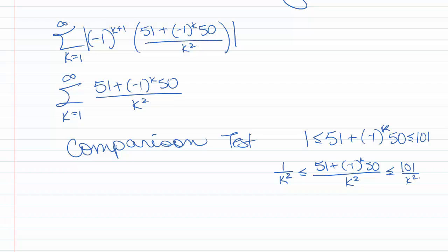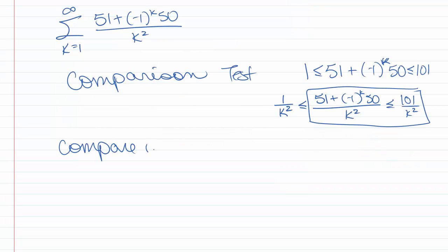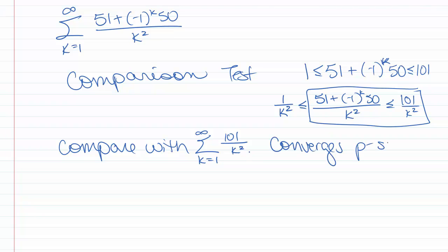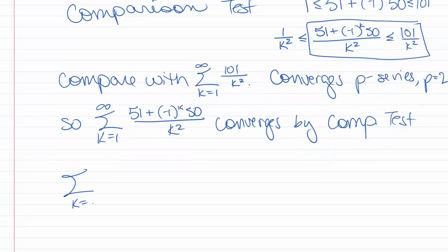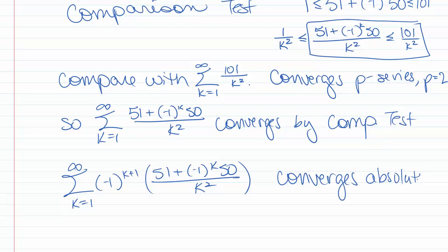Should we compare our series with 1 over k squared or 101 over k squared? Either one of those series converges — they're p-series with p equals 2. Since we want to show our series converges, we compare it with something bigger or equal. So we compare with the series k goes from 1 to infinity of 101 over k squared. This converges because it's a p-series with p equal to 2. So 51 + (-1)^k · 50 over k squared converges by the comparison test, which means the original series converges absolutely, and thus converges.